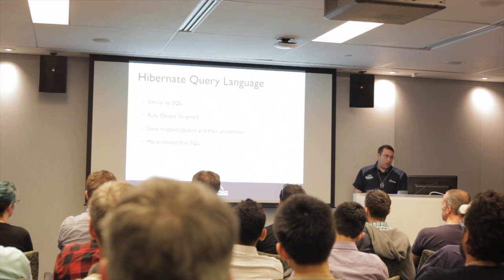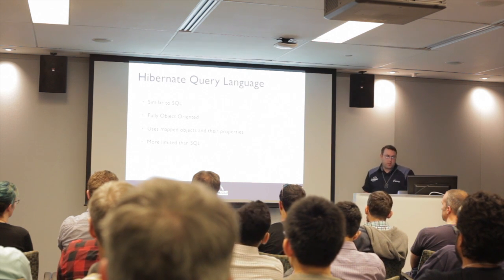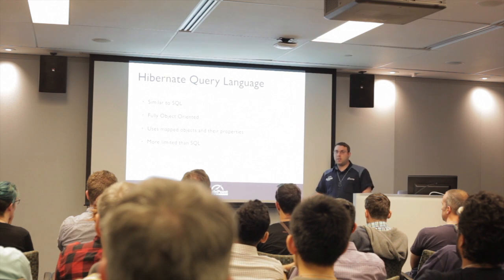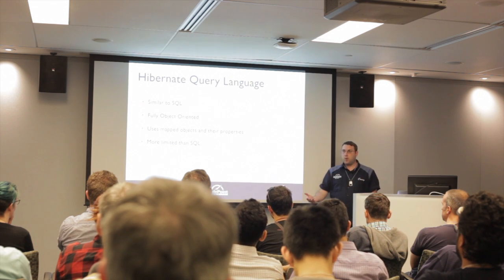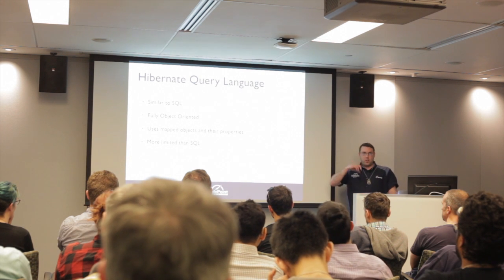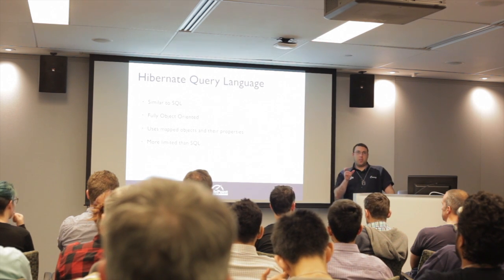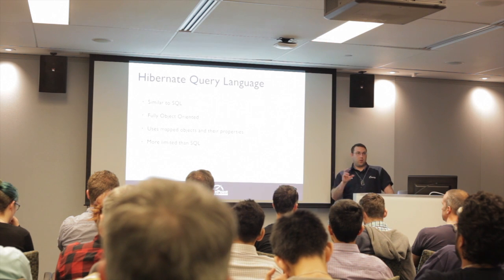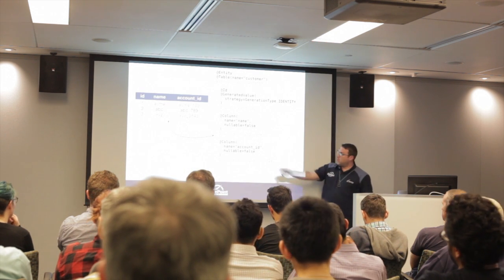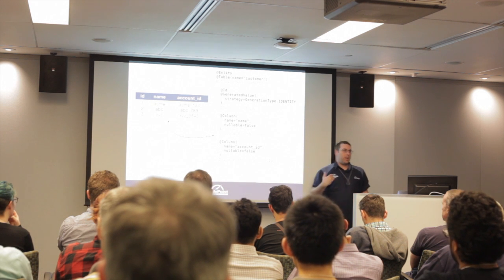Hibernate query language is similar to SQL, but it's fully object-oriented. Developers work with customer objects, user objects, or product objects — not SQL queries. HQL uses only the mapped properties of objects; if a field isn't mapped in Hibernate, you can't reference it in HQL.